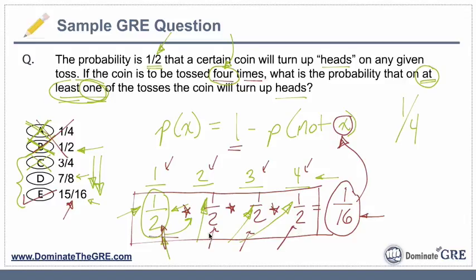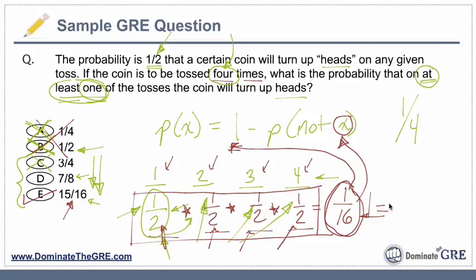In other words, if you got tails all four times, that probability is very small — one-sixteenth. Very small chance you're going to get tails four times in a row. So at least one heads would be one minus that: one minus one-sixteenth equals fifteen-sixteenths.